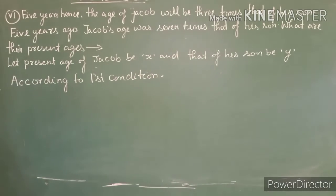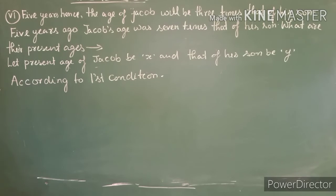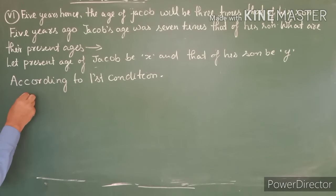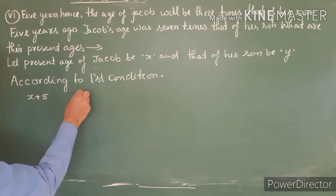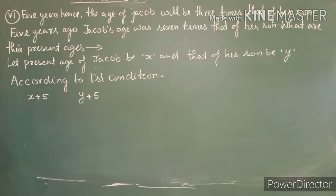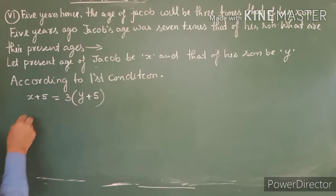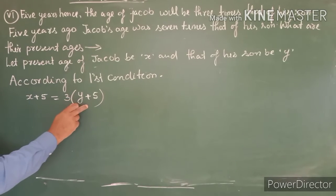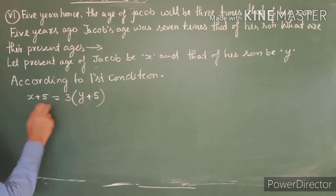Five years after, Jacob's age will be x plus 5, and five years after, son's age will be y plus 5. The condition says Jacob's age will be three times that of his son. So the expression is: x plus 5 equals 3 times (y plus 5).